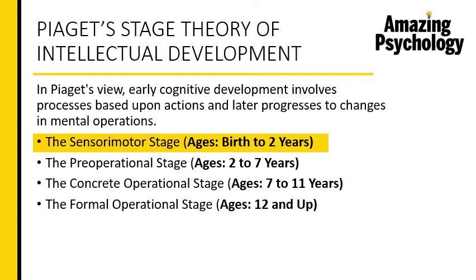The first stage is the sensorimotor stage, from birth to two years, and this is the stage we will be studying today. The other three stages are: the pre-operational stage from ages two to seven, the concrete operational stage from ages seven to eleven, and the formal operational stage from age twelve and above.